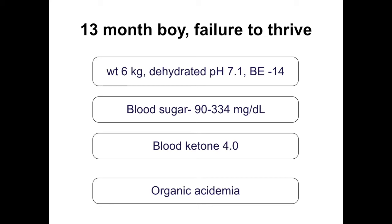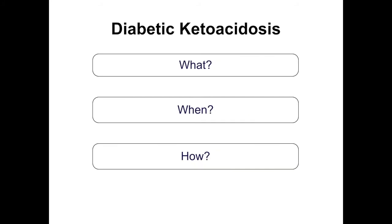Euglycemic DKA can occur in pregnant individuals, children with recurrent vomiting, or rarely those on SGLT2 inhibitors, but is otherwise very rare in pediatric practice. If you have severe acidosis with mild hyperglycemia, think of other possibilities — organic acidemias are clearly one of those.